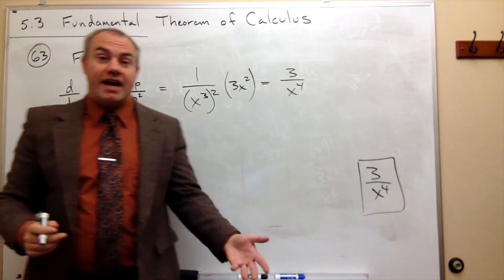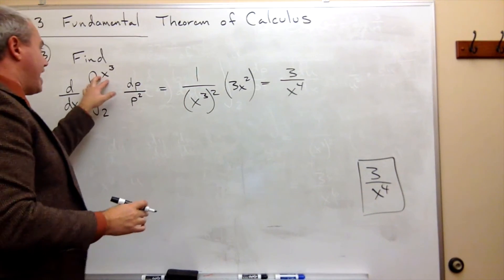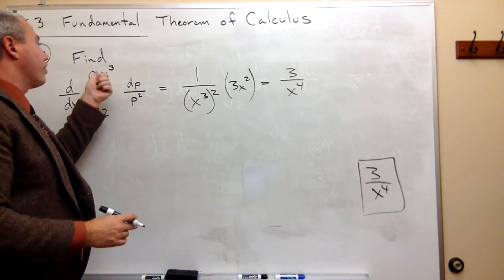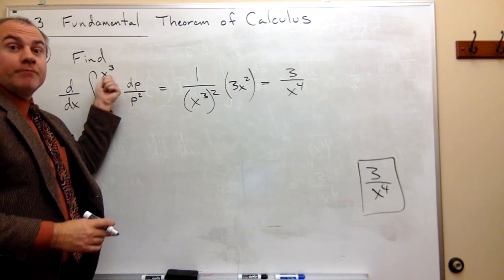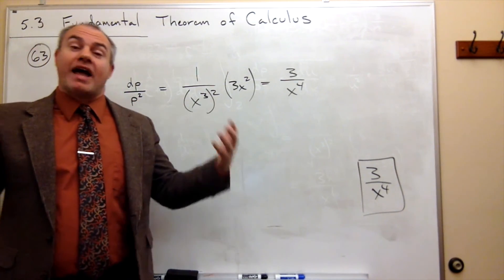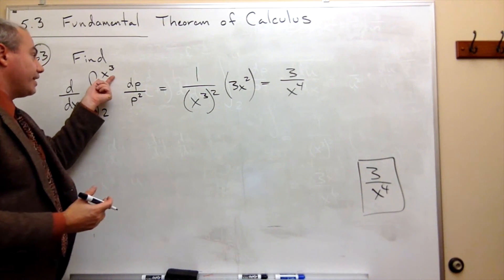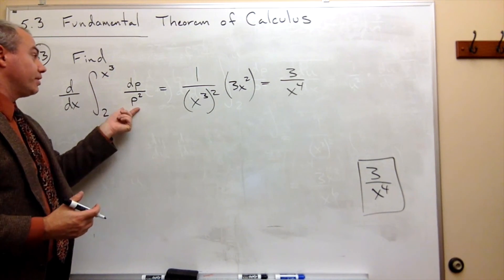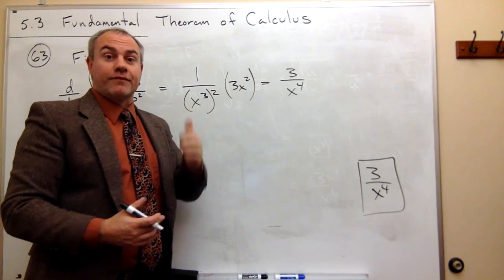So you can go through the long process of letting x cubed be u, finding du/dx, and doing all of that. Or you can kind of just do it simply by saying, take this guy, plug it in. But remember, you have to multiply by the derivative of that thing because we're using the chain rule. And if you remember all those things, you don't have to make a u substitution. You just plug in the x cubed and multiply by the derivative of x cubed, and you've got it.